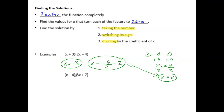Let's try another example: x minus four times three x plus seven. Our first solution — take the number, switch the sign making it positive, divide by the coefficient of x which is one, so x equals four. We can verify: four minus four is zero.